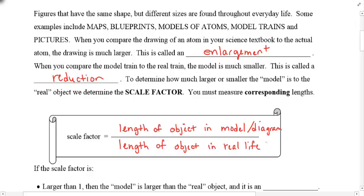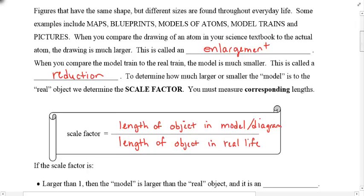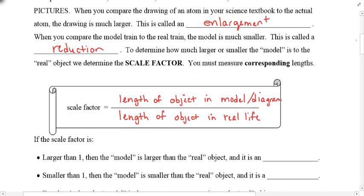Notice this is a ratio, so it's a comparison or a fraction. If the scale factor here is larger than 1, that means the numerator is bigger than the denominator. Then that means the length of the object in the model is larger. And this, of course, represents an enlargement.